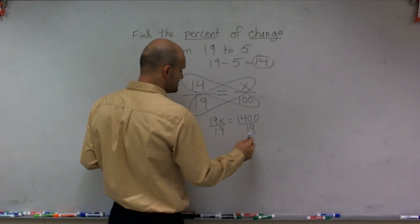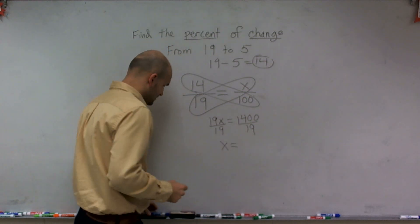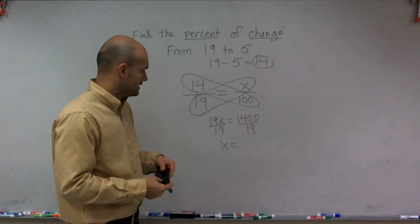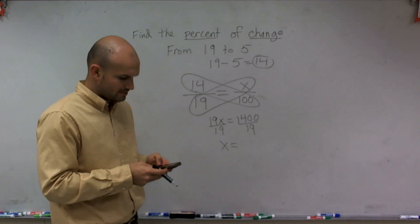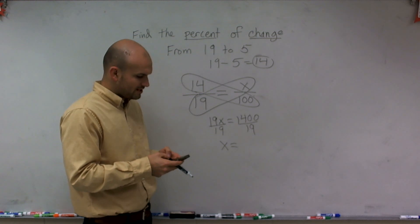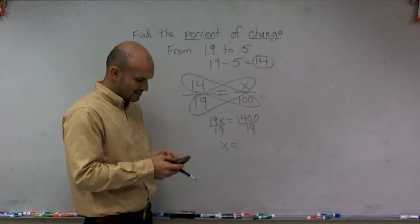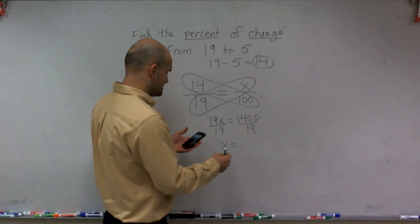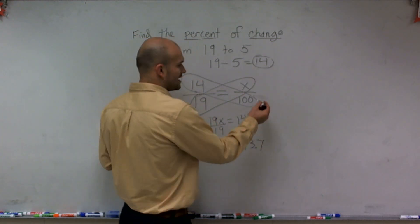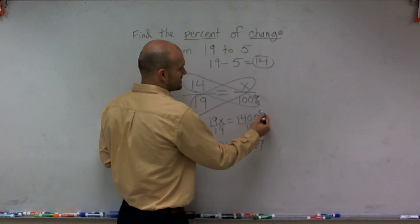Divide by 19 on both sides, and therefore I'm going to get x equals—let's see here, use my lovely calculator. 1400 divided by 19, which is 73.7.